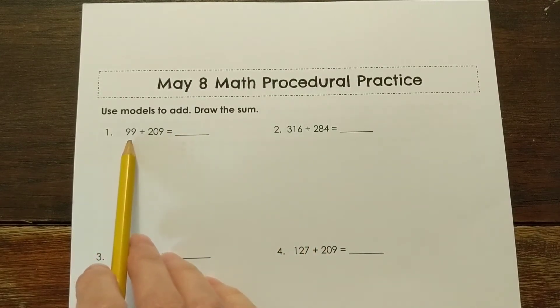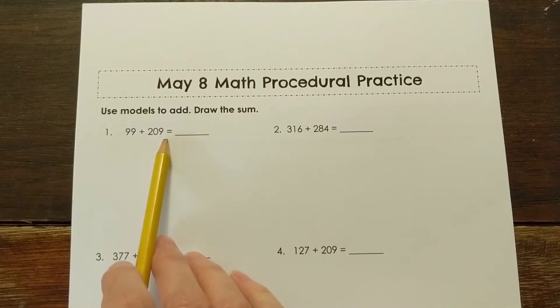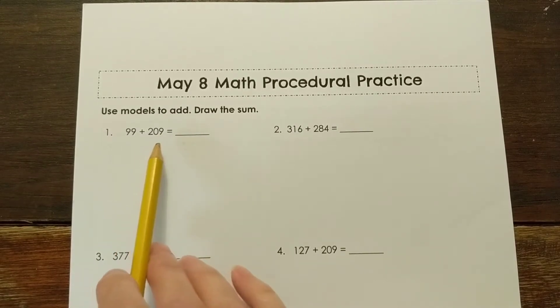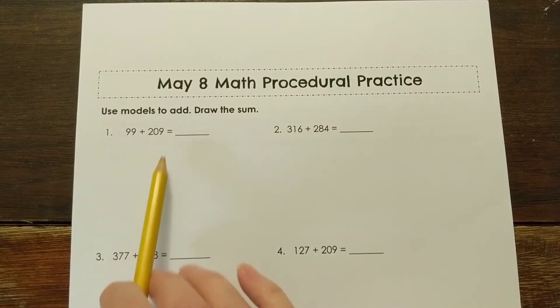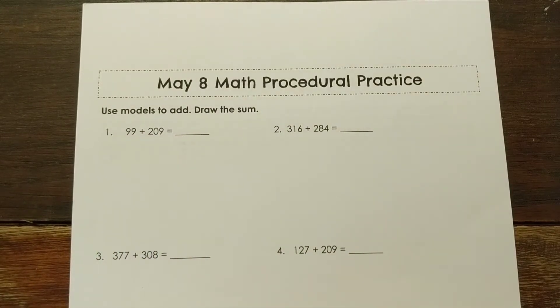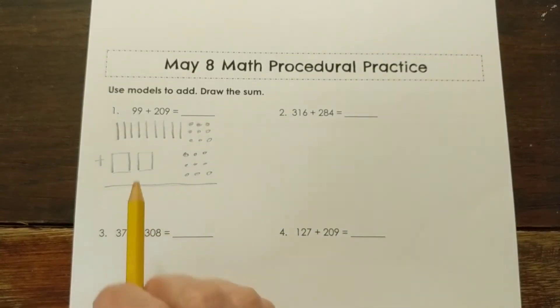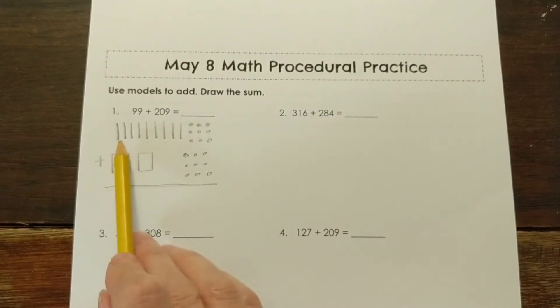Alright, so our first problem is 99 plus 209. So we're going to use hundreds, tens, and ones to draw this problem out first. I've gone ahead and drawn the problem out. We have 9 tens and 9 ones for 99. We have 2 hundreds and 9 ones for 209. There are no tens.